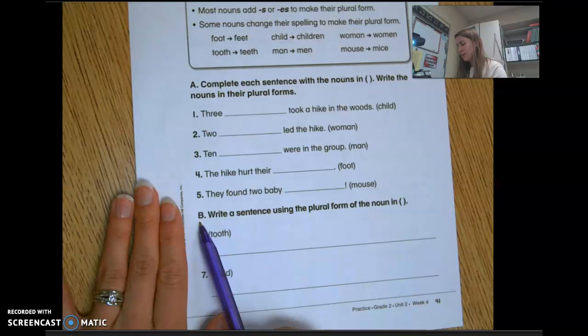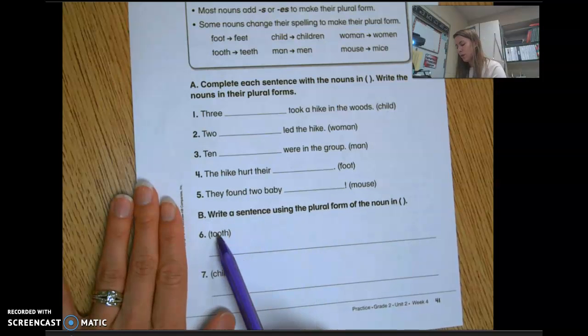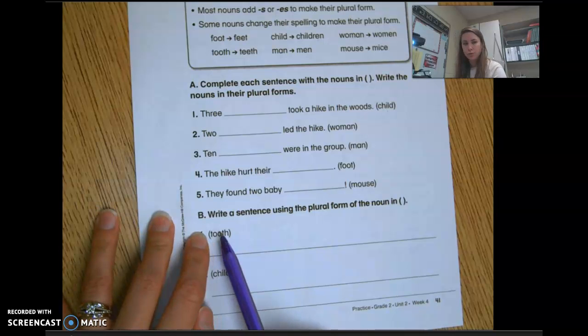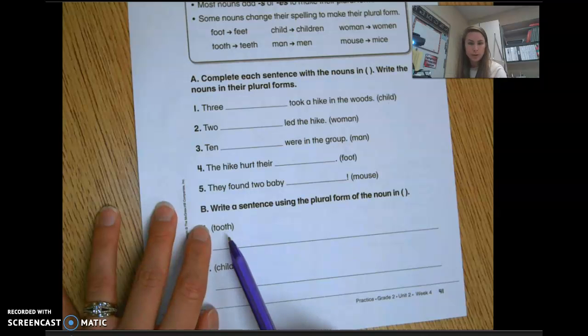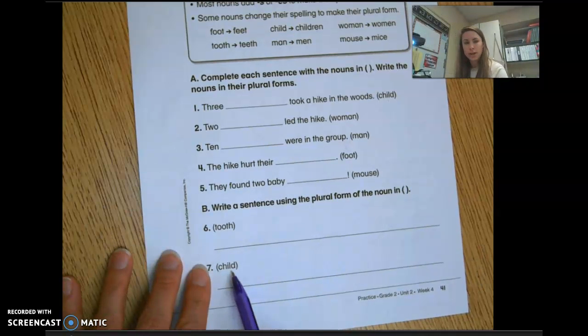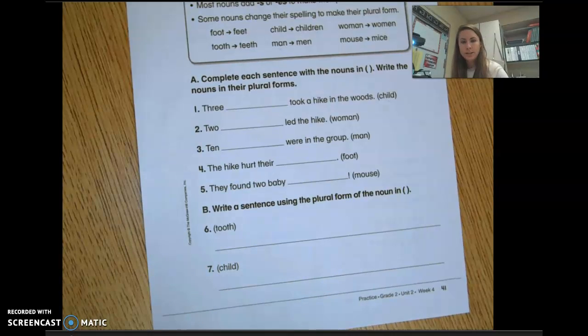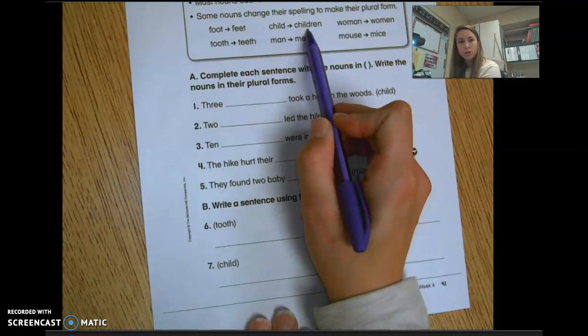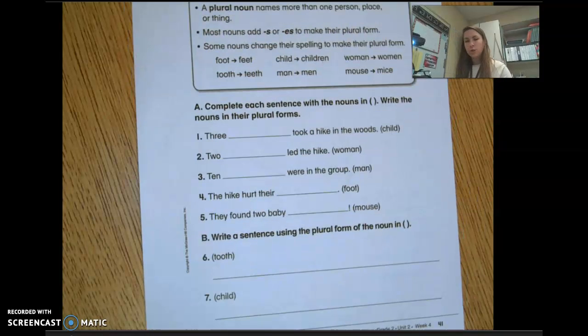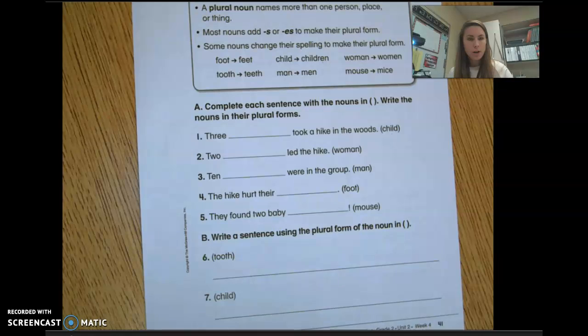Letter B says write a sentence using the plural form of the noun in parentheses. So you have to write a sentence using teeth instead of tooth so that you have a plural, like 'I lost two teeth over the weekend.' Number seven, you're using the word child, so how can you write a sentence using child as a plural? Remember, the plural is children. Once you are done with your word work, go ahead and turn it in. Feel free to watch the video more than once or rewind to some parts where you might not have understood what to do the first time.